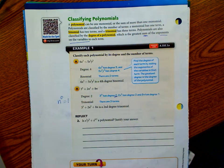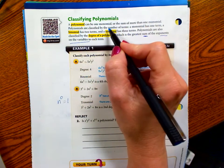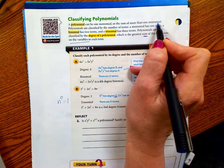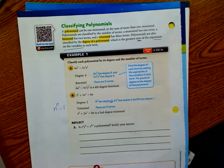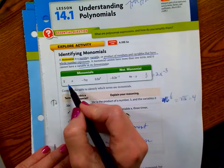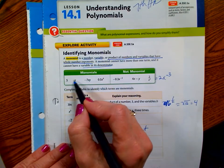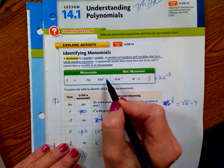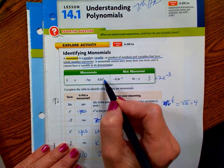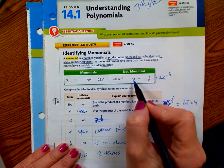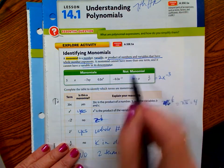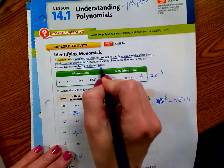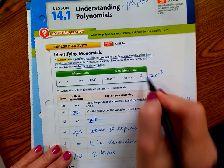First of all, polynomial—poly means many—and so a polynomial can be one monomial or the sum of more than one monomial. Remember, a monomial is one term, but it can be a number, a variable, or a product of numbers and variables that have a whole number exponent. It can't have a negative exponent, and it can't be more than one term for a monomial, and it cannot have a variable in the denominator.